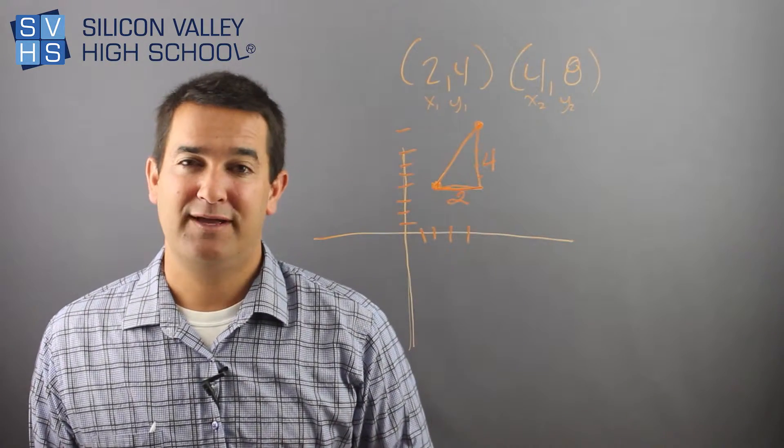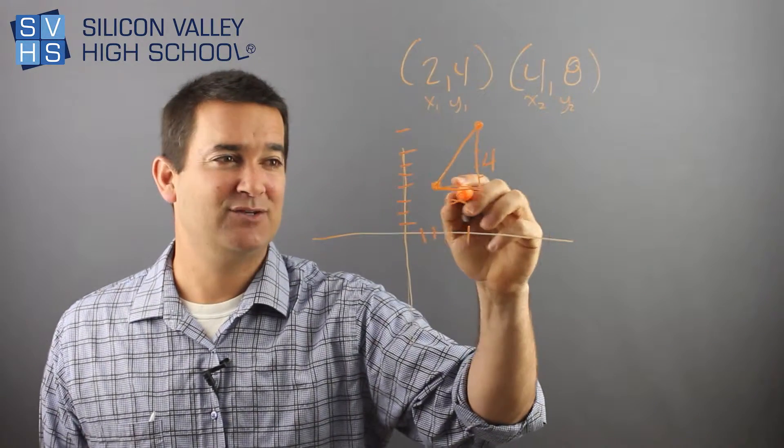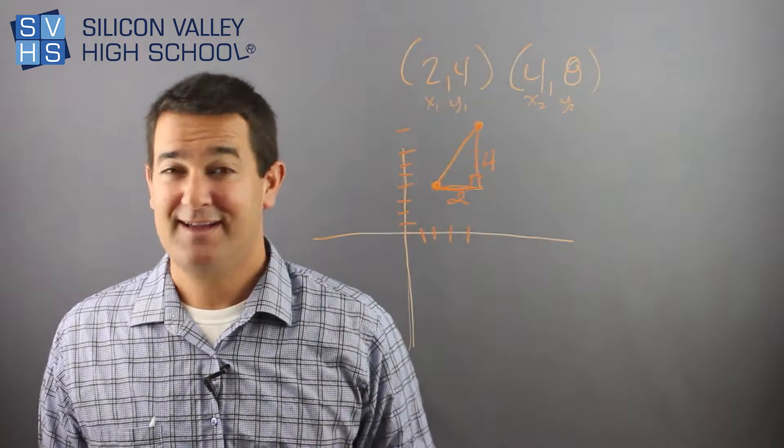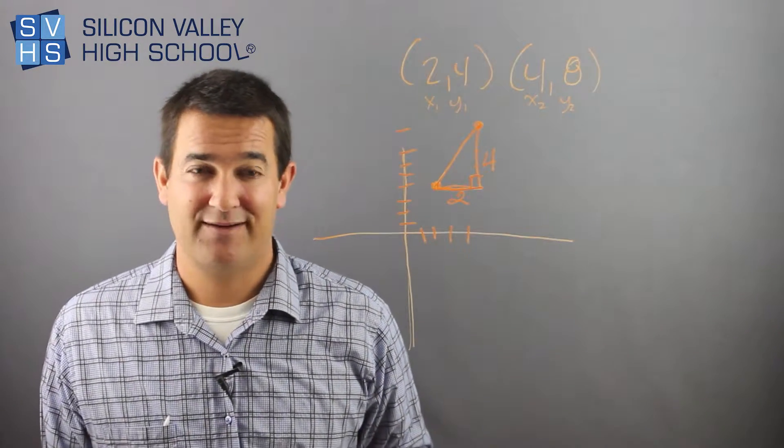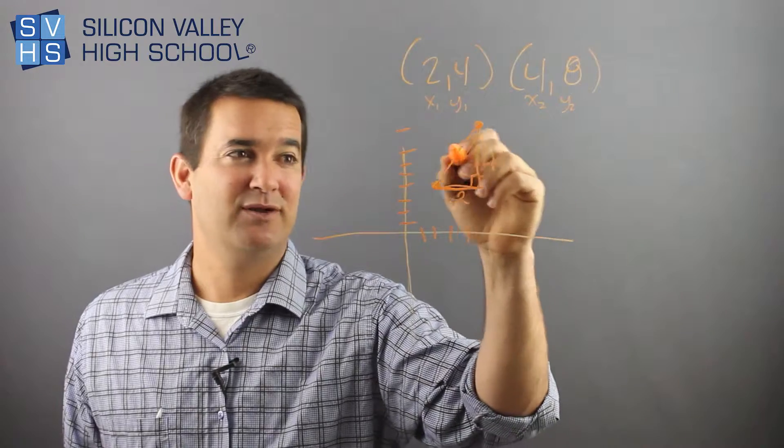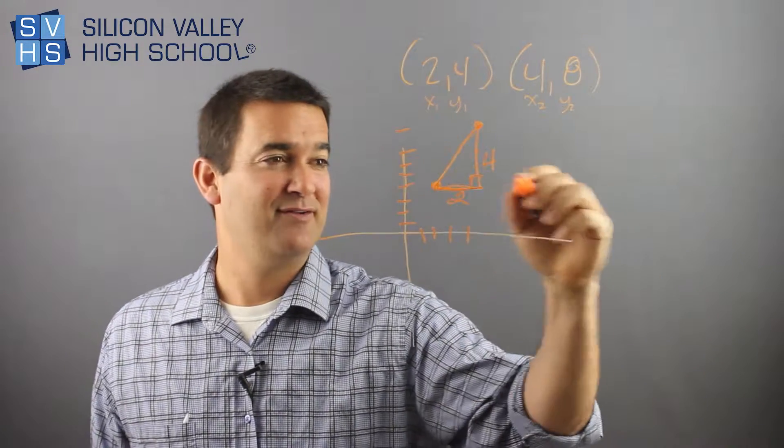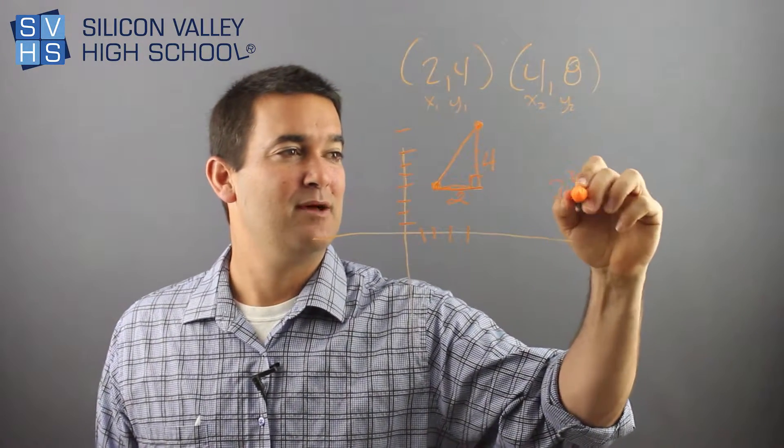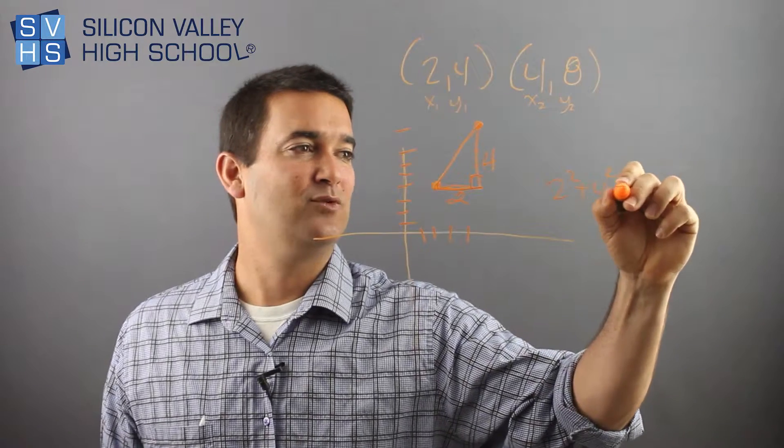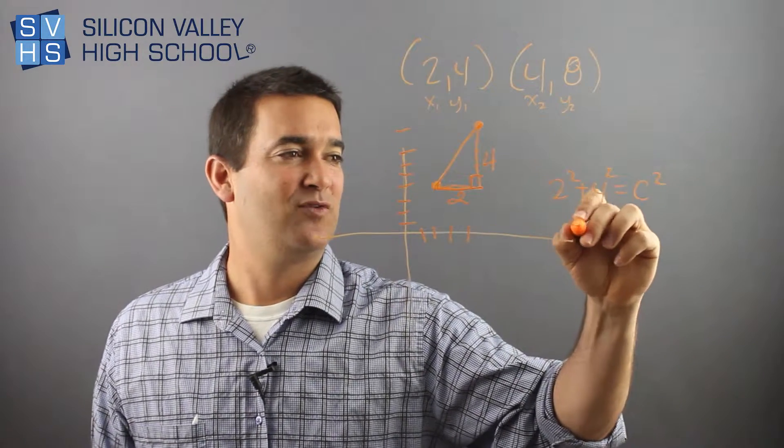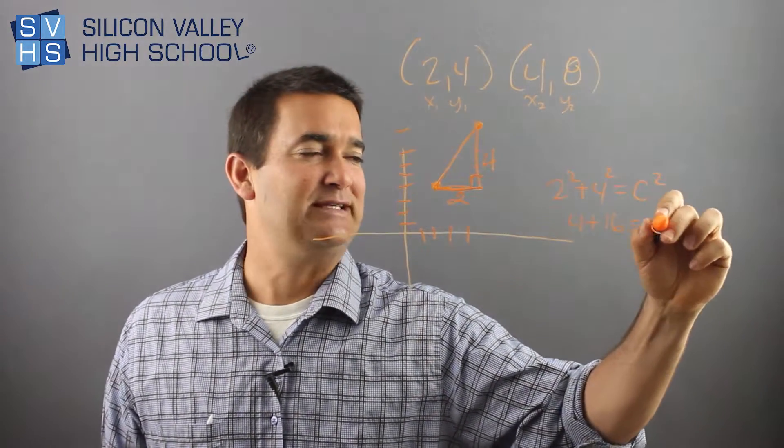So now it goes back to we have two sides, which are always at a right angle from one another. This goes back to the whole like what you learn in the seventh grade or whatever. A squared plus B squared equals C squared. So then you would have this guy, 2 squared, plus this guy squared equals C squared.